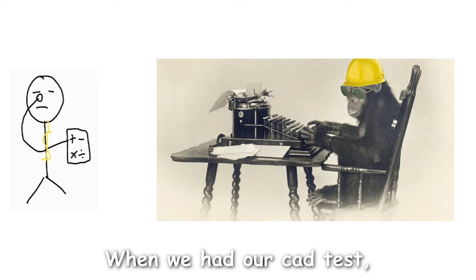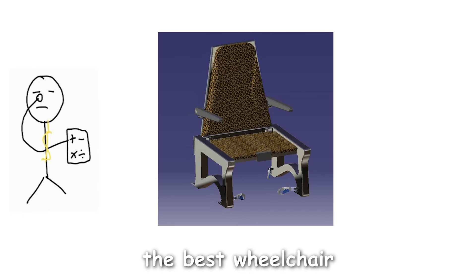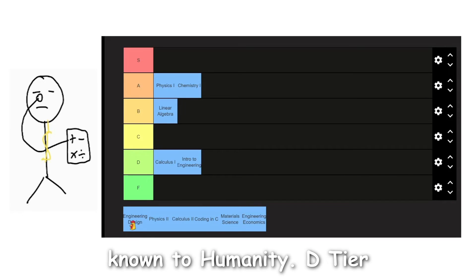When we had our CAD test, the hardest part about creating the product was finding the tool I needed to use. I knew which one I needed, but there is no search option to search for the tool, so I had to hover over each icon until I found the one I needed. Shout out to my project group as we created the best wheelchair-accessible aircraft seat known to humanity. D tier.